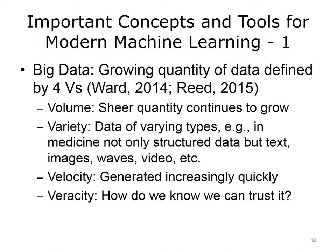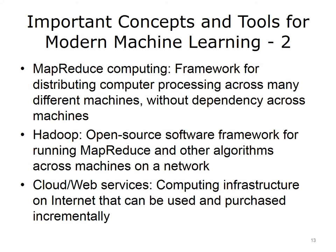There are some other important concepts and tools in modern machine learning. One is MapReduce Computing, which provides a framework for distributing computer processing across many different computers, including those across the Internet. This process is done so there's no dependency of the processing on one machine from another, enabling processing in parallel on many different machines. Hadoop is an open-source software framework that allows the running of MapReduce and other algorithms widely distributed across computer networks, including those across the Internet. We may also hear about cloud or web services, where there is a computing infrastructure on the Internet that can be used and purchased incrementally.